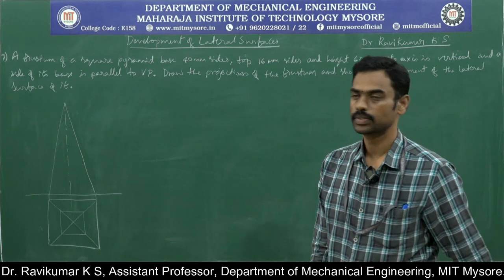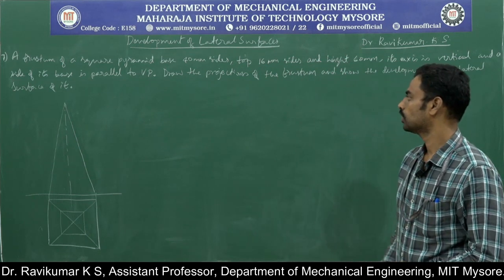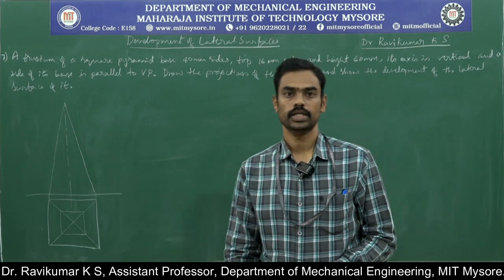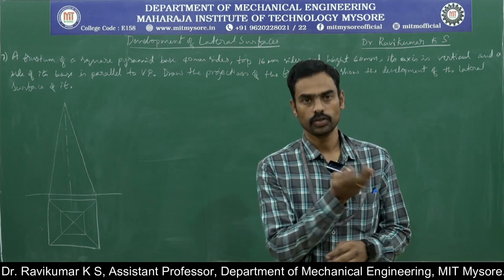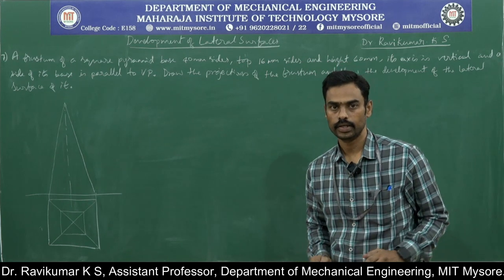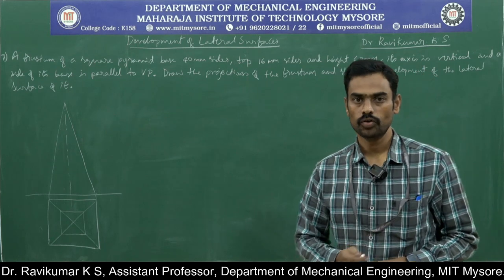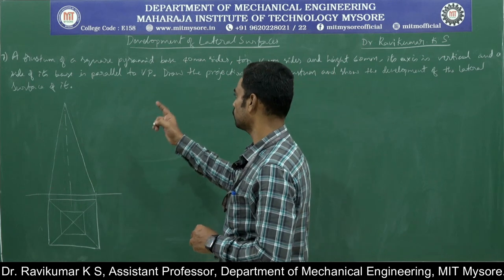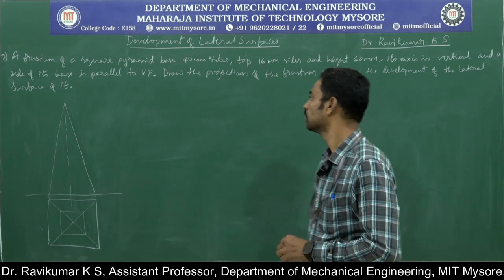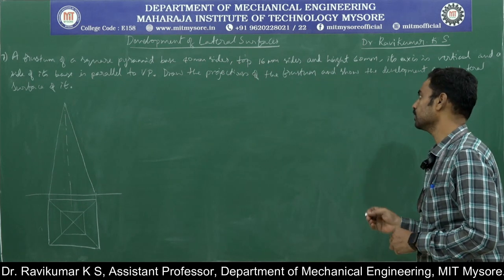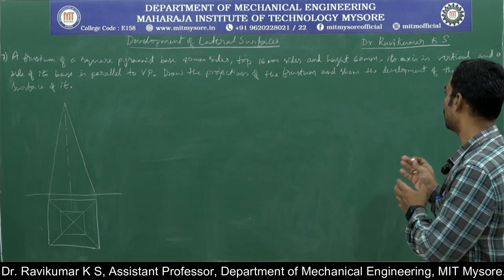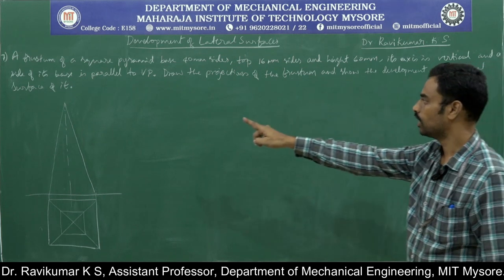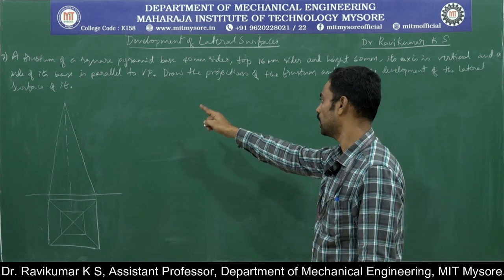The next problem, problem number 7, is on a frustum of a square pyramid. A frustum means it is cut by a section plane which is parallel to HP and perpendicular to VP — not at an angle. The problem: a frustum of a square pyramid with base 40mm sides, top 16mm sides, and height 60mm. Its axis is vertical and the side of its base is parallel to HP.